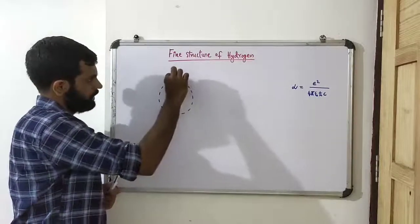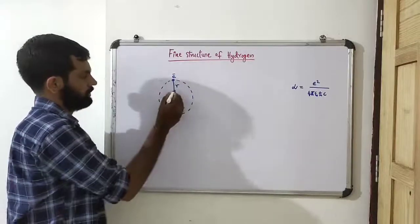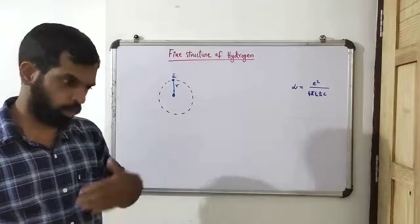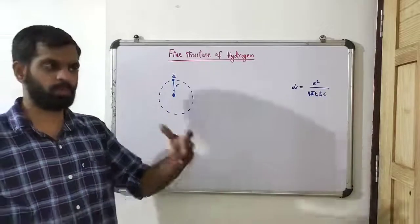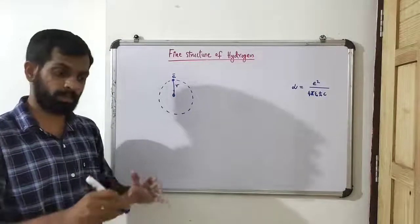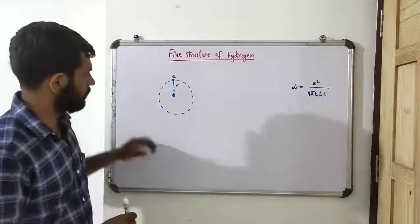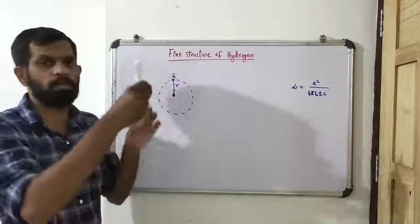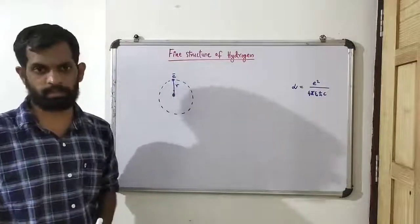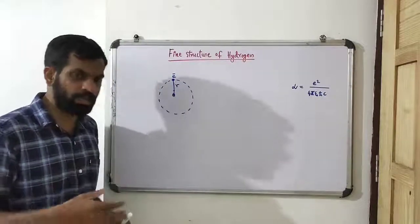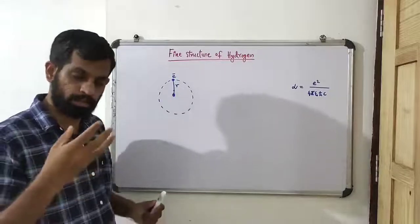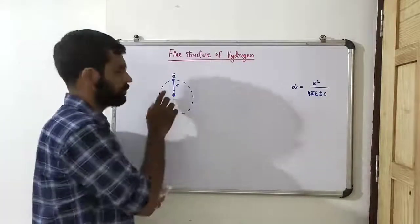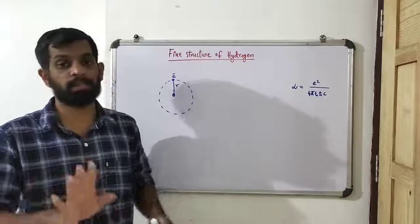The proton and electron share a common center of mass. That center of mass will be very close to the nucleus, because the nucleus is very much larger — or very much more massive — than the electron. Here, the common center of mass: the electron and nucleus are rotating. But actually, in the calculation of energy, we neglect the motion of the nucleus.